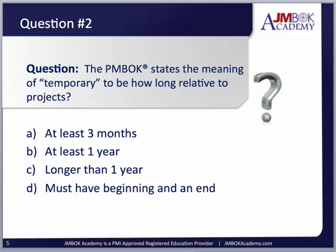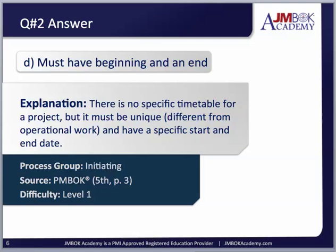You'll know your project's timeframe after creating your project plan, your WBS, and your network diagram, but that's not what the question is asking. Also, on the exam you don't get 'all of the above' or 'none of the above' options, which makes it slightly easier. So again, a project must have a beginning and an end, no specific timetable, but it must be unique. This comes from the PMBOK 5th edition, page 3, difficulty level 1.